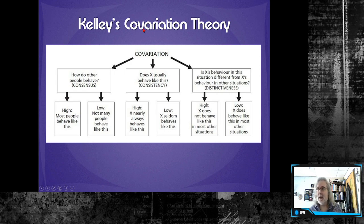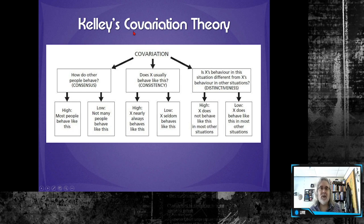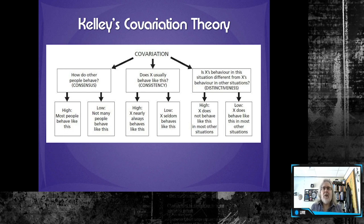Let's break it down to the root word. The basic word of covariation is 'vary,' which means something is not always the same. For example, if the reason a student is late to class varies, that means it's not always the same reason. When we put the prefix 'co' in front of a word it means 'with,' so covariation means there are two or more variables that exist at a time.